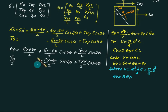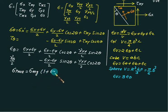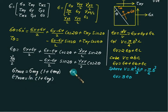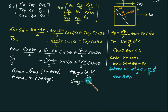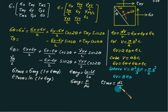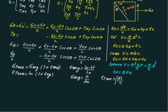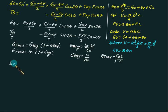True stress equals engineering stress × (1 + engineering linear strain). True strain is ln(1 + engineering strain). Engineering strain is (initial length − final length) / initial length, and engineering stress is force / initial area. True strain is defined as the integral of dL/L.